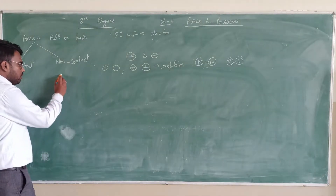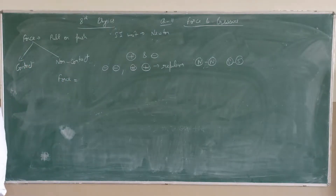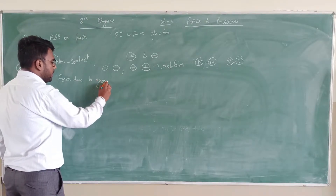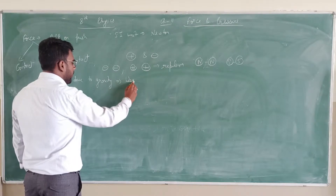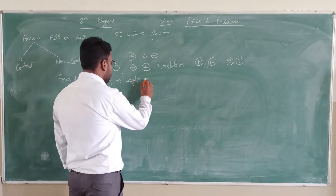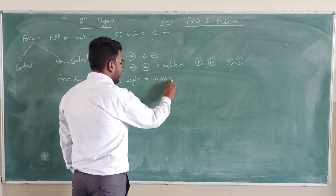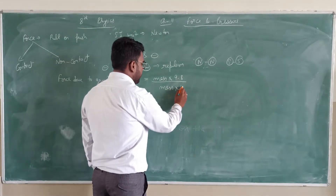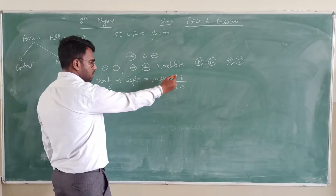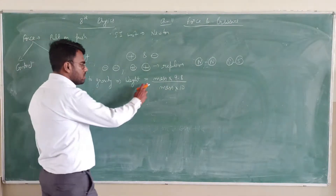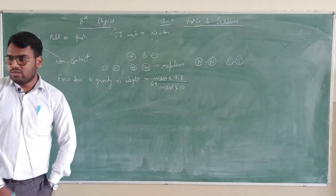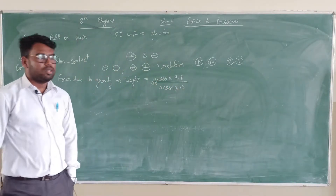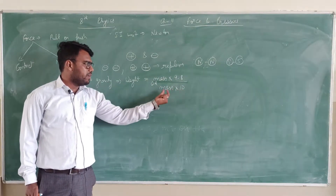One more thing: force is also related to the gravity of Earth — we call it weight. There is a difference between mass and weight. The formula for weight is: weight equals mass into 9.8, and we can take the approximate value as mass into 10. For example, a person has a mass of 40 kilogram, so the force of gravity is 40 into 9.8. To be more precise the exact value is 40 into 9.8, but we take 40 into 10, that is 400 Newton.